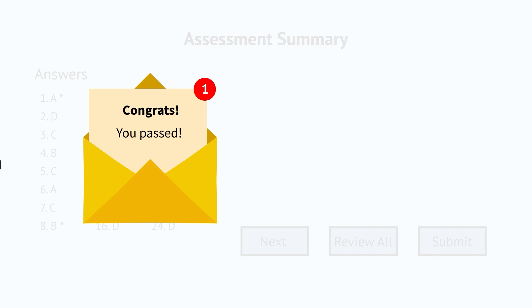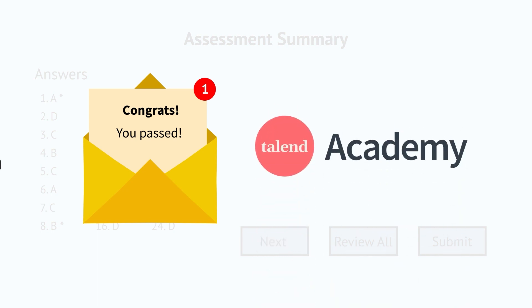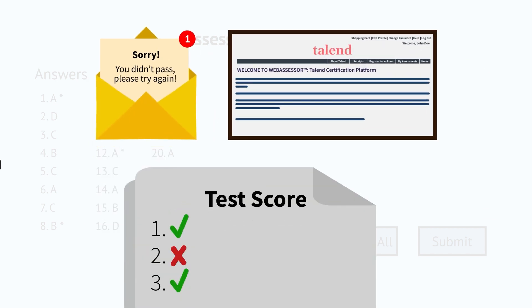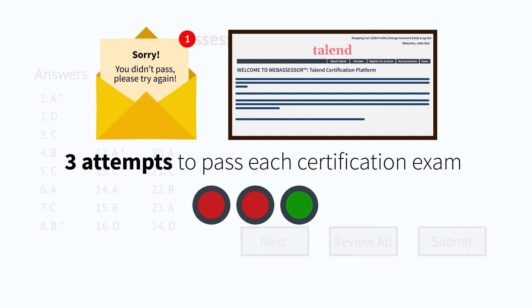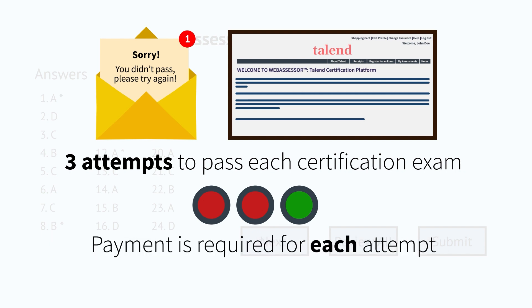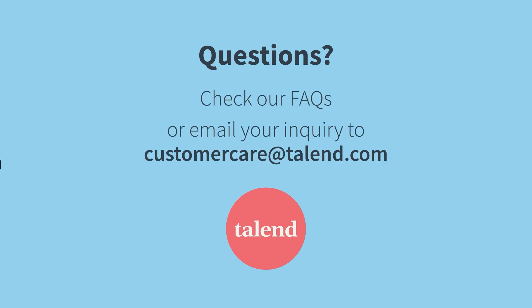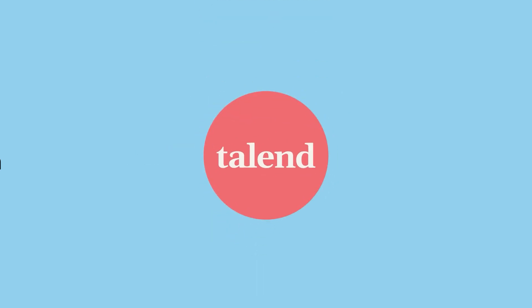If you pass, you'll receive your certificate by email from WebAssessor, or it'll be available in Talent Academy. If you need to retake the exam, rebook it by logging into your WebAssessor account. To better prepare for further exam attempts, refer to the topic scoring information provided at the end of your exam, so you can focus on the topics you found most challenging. You have three attempts to pass a Talent Academy certification exam, and a payment is required for each attempt. If you have any questions, refer to our comprehensive FAQs or email your inquiry to customercare at talent.com. Talent wishes you the best of luck with your exam.